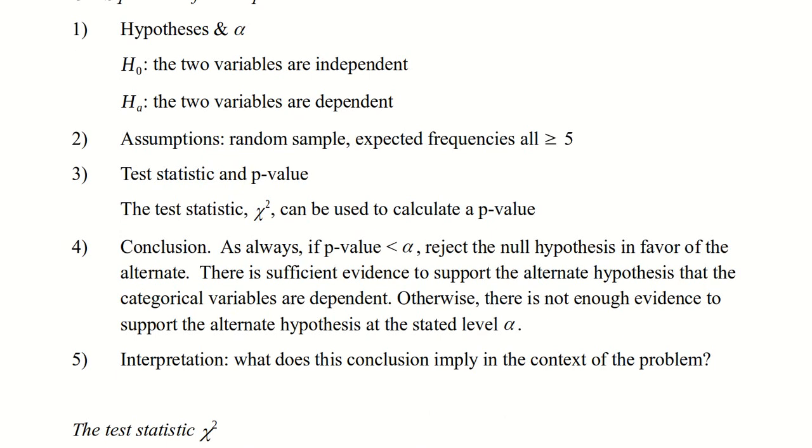As always, if the p-value is less than alpha, we reject the null hypothesis in favor of the alternative, and we say that there is sufficient evidence to support the alternative hypothesis. That is, the categorical variables are dependent. Otherwise, we say there's not enough evidence to support the alternative hypothesis. The interpretation is when we state what the conclusion means in the context of the problem.